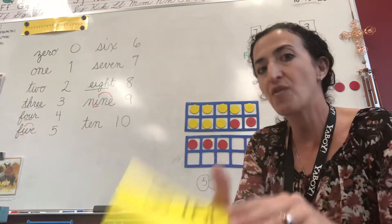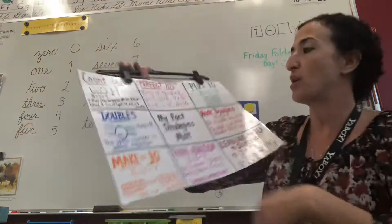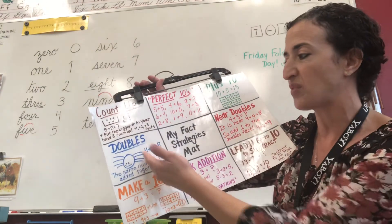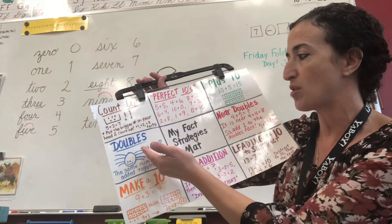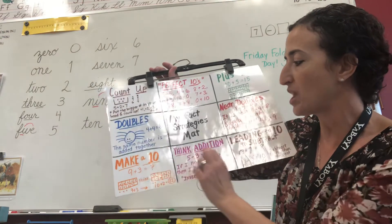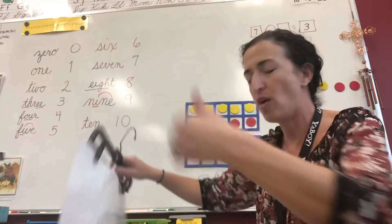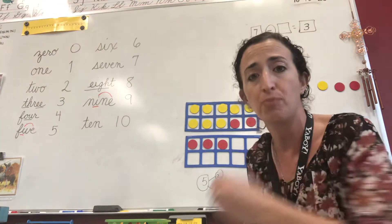Again, it's different than the way we learned. Making tens was on that strategy sheet I was telling you. Another one is doubles, memorizing your doubles facts. If you know 4 plus 4, then you know 4 plus 5 is a doubles plus one. You can think addition when you're using subtraction. We use number lines. We have all of these strategies that are so important.